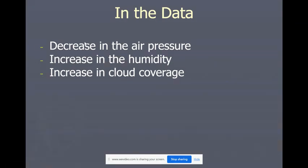Now before we move on, let's talk about the kind of data we would see in a low pressure system. First, a decrease in the air pressure, hence the name low pressure system. Because there is more space in the air now, that's going to lead to an increase in the humidity. There's more water vapor in the air. That can also lead to an increase in the cloud coverage because again, there's more water in the air to evaporate and condense in the water cycle.